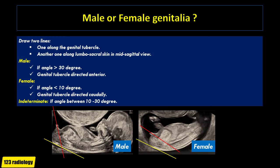On the image at 12 weeks of gestation, the genital tubercle is directed anteriorly with the angle more than 30 degrees, denoting male. On the other image, the genital tubercle is directed caudally with the angle less than 10 degrees, denoting female.